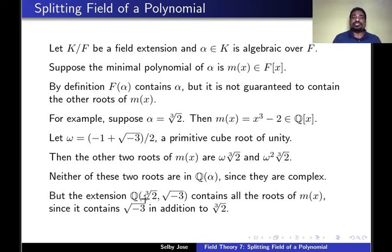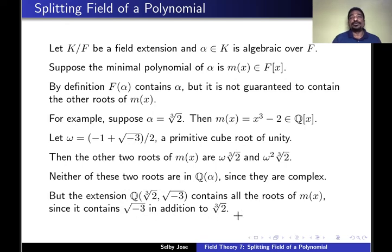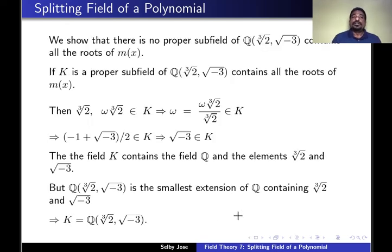The extension Q(∛2, √(-3)) contains all the roots of m(x) because this field contains √(-3) and ∛2. We show that there is no proper subfield of Q(∛2, √(-3)) that contains all the roots of m(x).